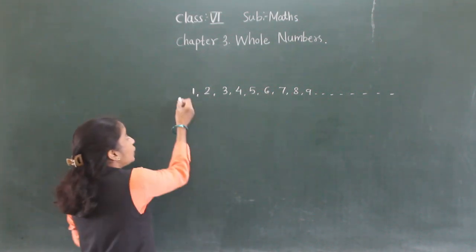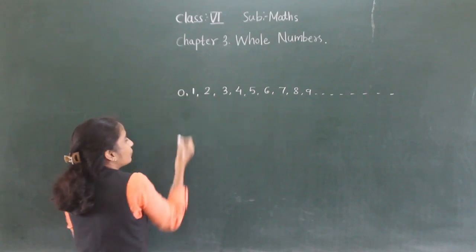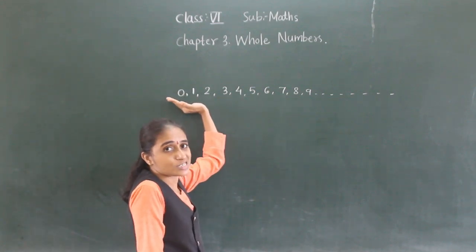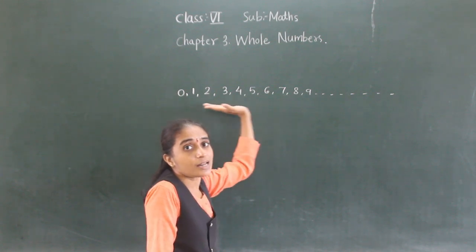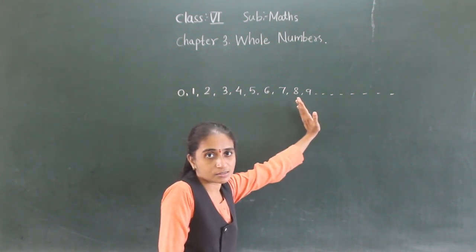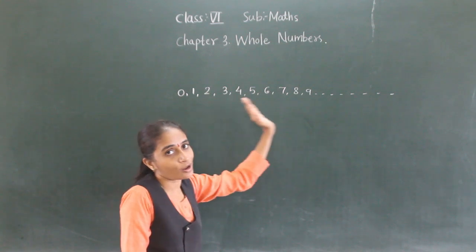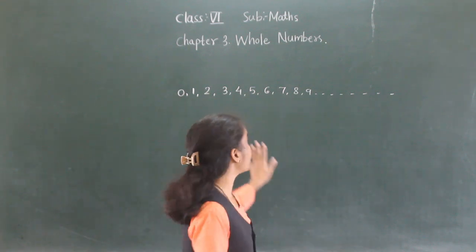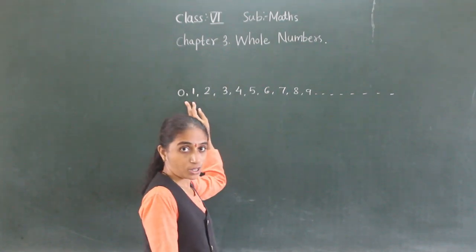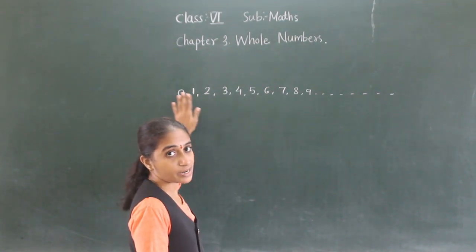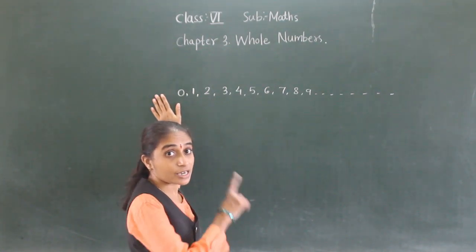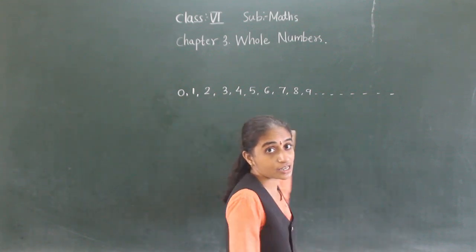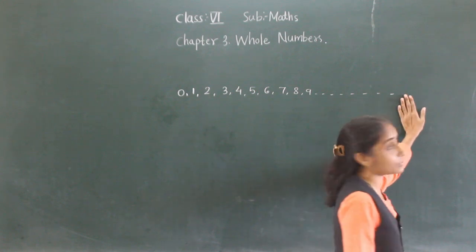Now, including zero — if we include zero with the natural numbers, those numbers are called whole numbers. The smallest whole number is zero. There is no greatest whole number.